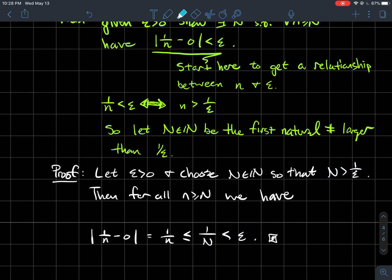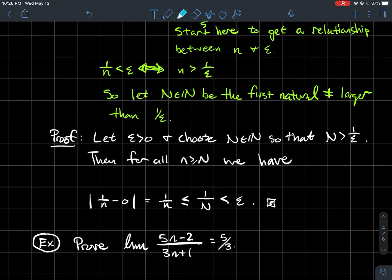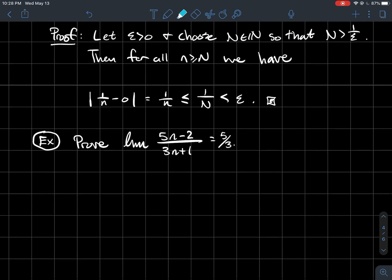We've ensured that as long as you're this far out in your sequence, the distance to 0 is definitely smaller than epsilon. This works for any epsilon you plug in. That was a pretty easy one.